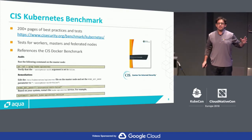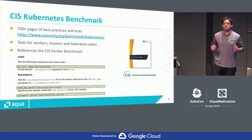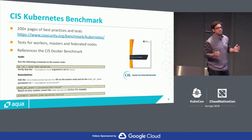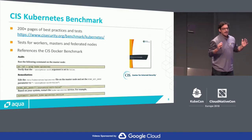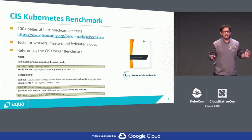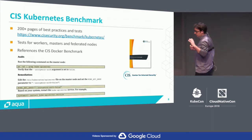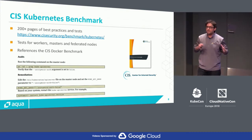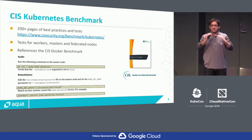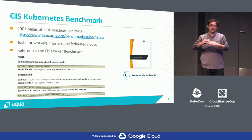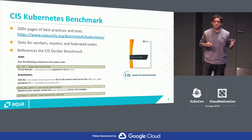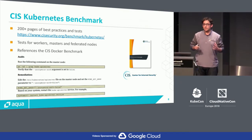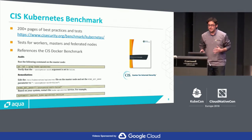CIS, the Center for Internet Security, has done an incredible job. They've created a standard both for Docker and Kubernetes which defines how your Kubernetes should be secured. It's a 200-plus page document, very detailed, with step-by-step examples, and most organizations should be using this to gauge how secure their Kubernetes cluster is or not.